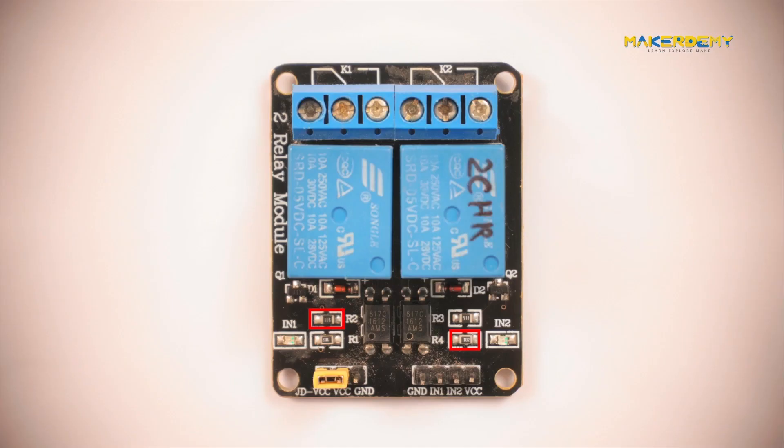The R2 and R4 are the resistors that form the common emitter configuration of the relay's switching circuit. The R1 and R3 are pull-up resistors for the optocouplers. The IN1 and IN2 LEDs are used to show the status of the relay, that is, whether it is energized or not.